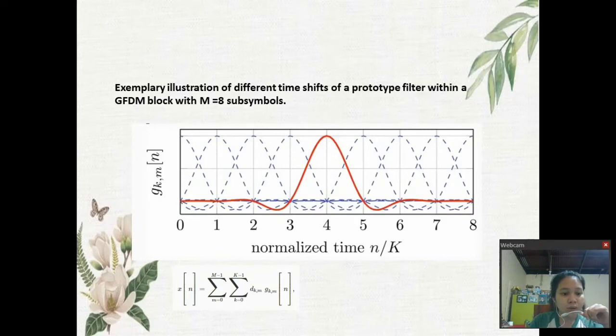Therefore, the sequence after the filtering process remains of length N samples. Finally, the baseband transmit signal in the digital domain is obtained through the summation of all sub-carrier and sub-symbol signals according to the operation below.